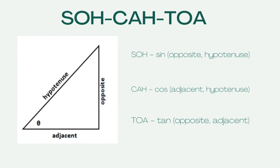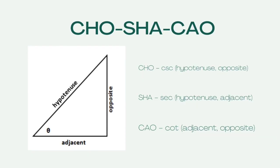In secondary, we have COSHA and KAU. COSHA stands for CO — cosecant, H — hypotenuse, A — opposite. SHA stands for S — secant, H — hypotenuse, A — adjacent. And KAU stands for C — cotangent, A — adjacent, O — opposite.